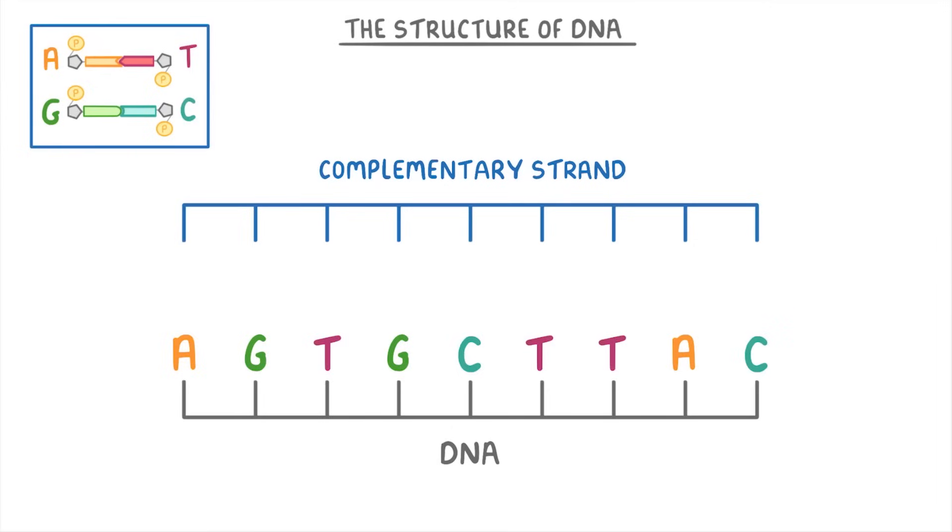So we know that the first base on our complementary strand must be a T, because that's complementary to the A. Then the second base must be a C, because that's complementary to G. Then the third must be an A, then C, then G, and so on.